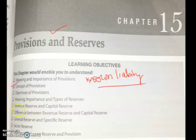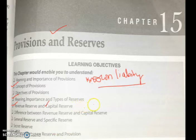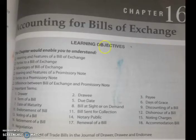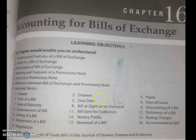Regarding reserves — reserve capital and capital reserve — you should know the different types of reserves. These are some of the important things to study from this chapter. The next chapter is accounting for bills of exchange, which is equally important. Questions are asked from this chapter, so you should know how many parties are involved and what a bill of exchange is.